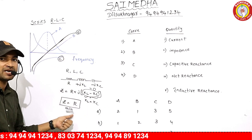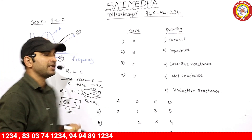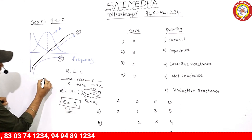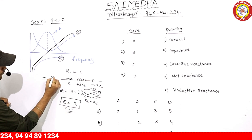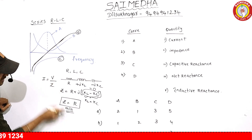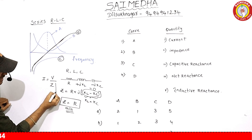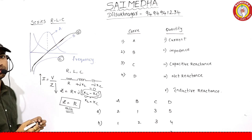Impedance minimum means current value is maximum.